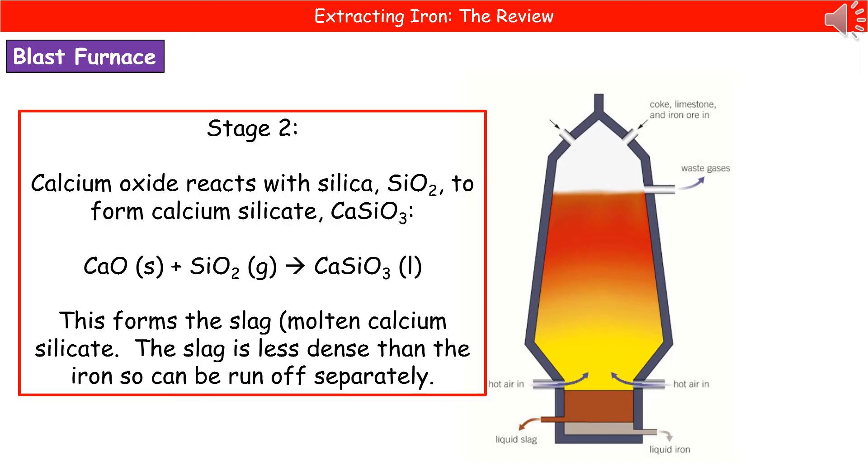That's the removal of our impurities at that point. Our silica is going to be our impurity, and by reacting with the calcium oxide there, we form the calcium silicate to remove any of those additional impurities that would have impacted on our metal.